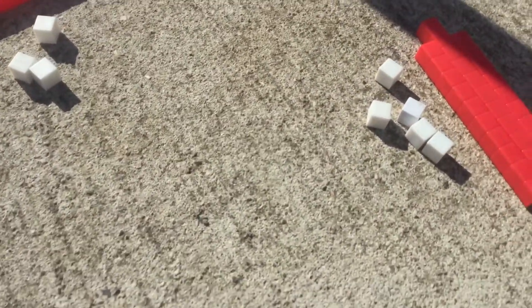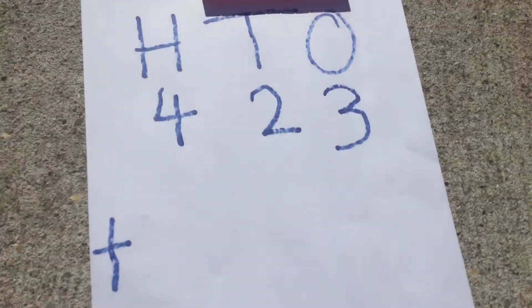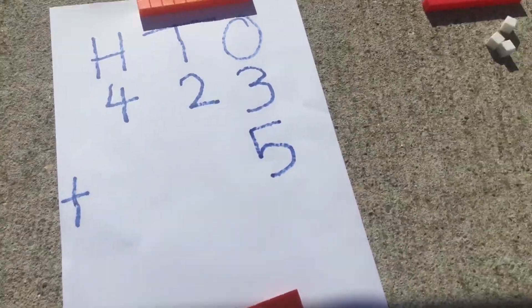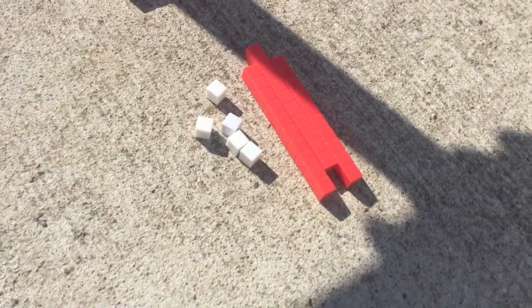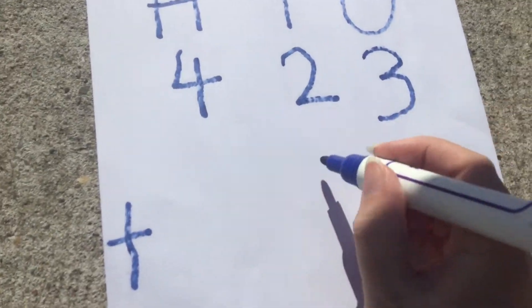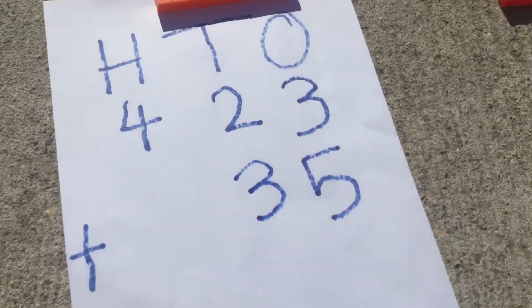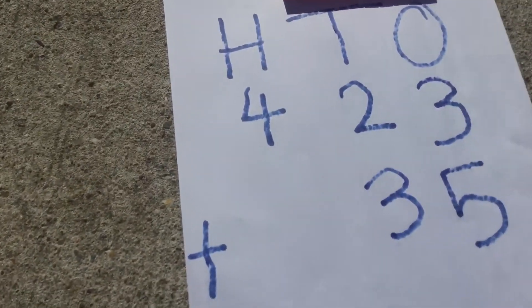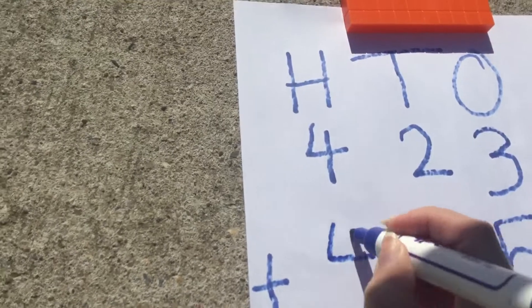I know that there are 5 ones there. So I will put that in the ones column underneath the 3. There are 3 tens. So I need to put that in the tens column underneath the 2. There are 4 hundreds. I need to put that in the hundreds column underneath the 4.